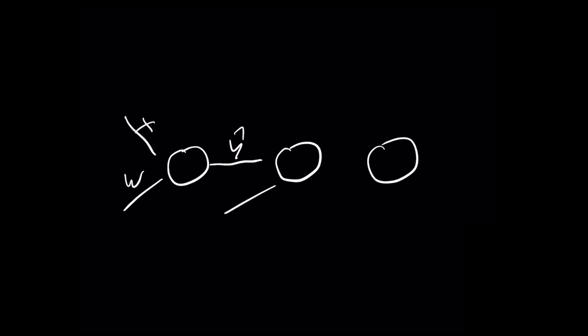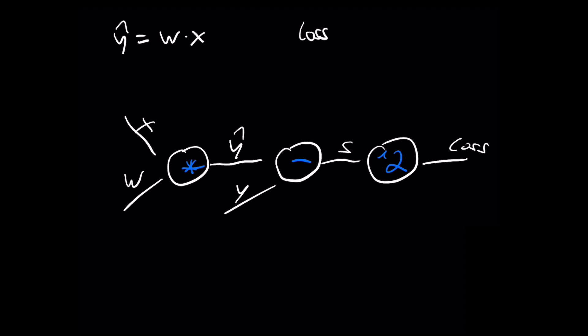In this example we look at a simple linear regression algorithm, which we can represent with a neural network and a computational graph. First we have a multiplication node that multiplies the weights and the input, giving us an approximated y that we call y-hat. Then we also have the actual y, so we use a subtraction node and calculate y-hat minus y. Then we calculate the loss function, which is usually the root mean squared error — but to keep it simpler we only use the squared error here. So we have one more node with a square operation and then obtain the loss.